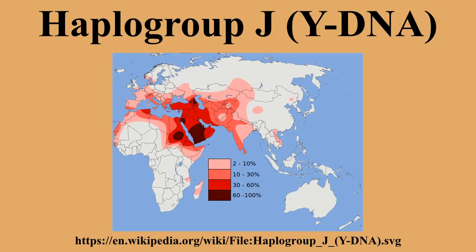Haplogroup JM304 is believed to have arisen roughly 48,000 years ago in Western Asia. It is most closely related to Haplogroup I-M170, as both lineages are Haplogroup IJ subclades. Haplogroup IJ and Haplogroup K derive from Haplogroup IJK, and only at this level does Haplogroup IJK join with Haplogroup G-M201 and Haplogroup H as immediate descendants of Haplogroup F-M89.